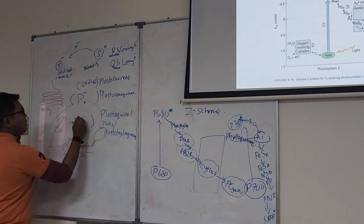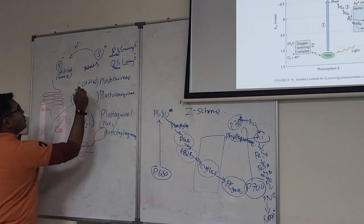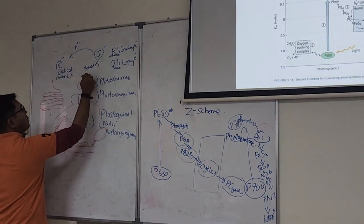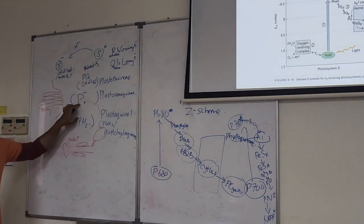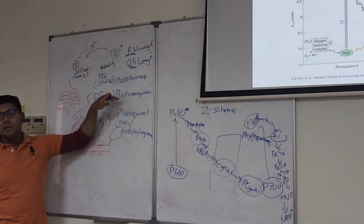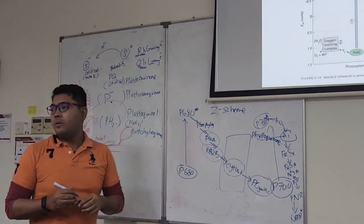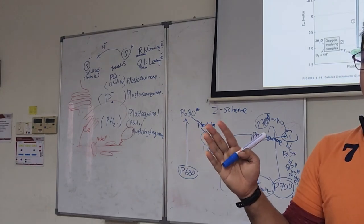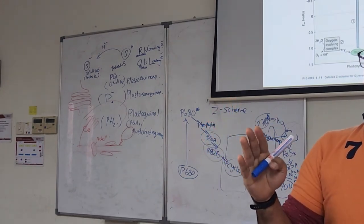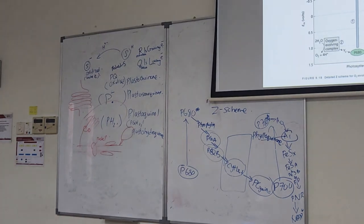Plastoquinol. So this becomes PQH2. This is only PQ. No charges. Receive one electron. Receive two hydrogen. Still similar molecule. But now the molecule with different states of charges or reduction level attached to it.